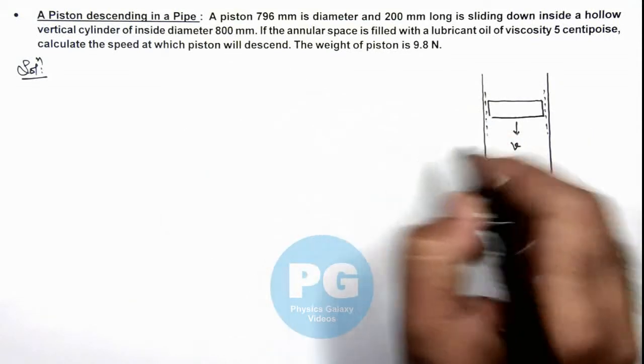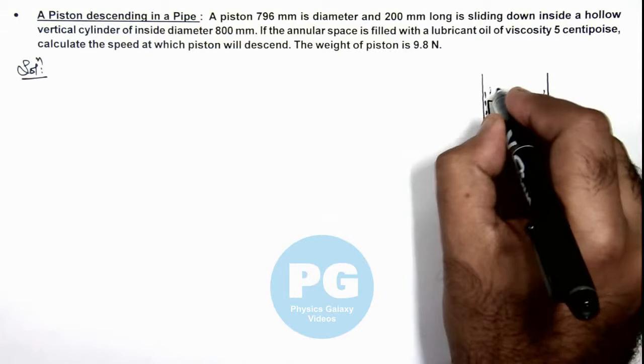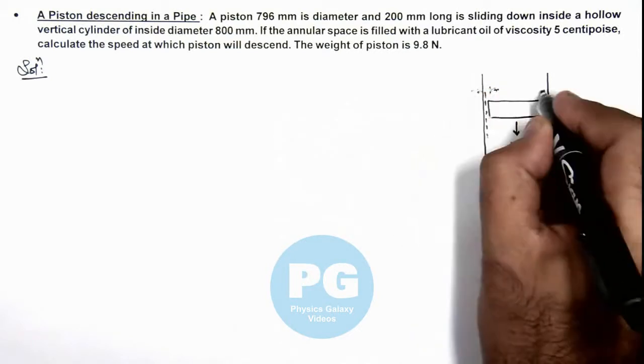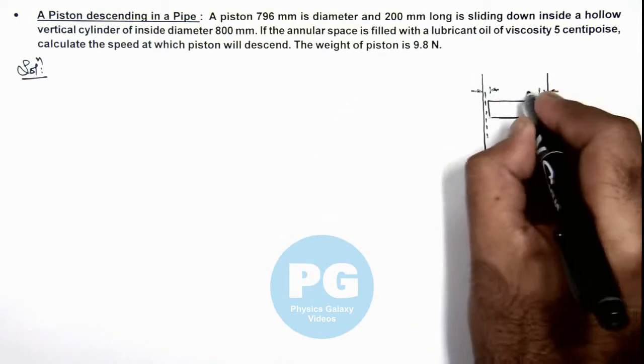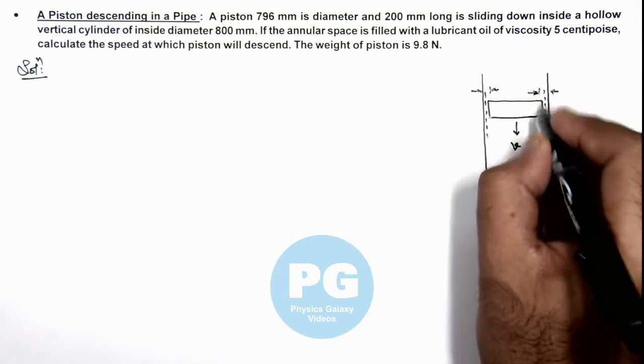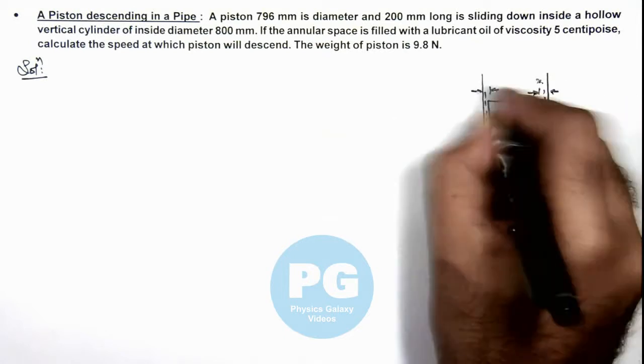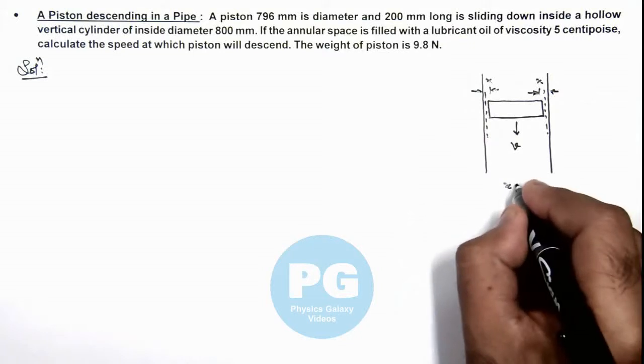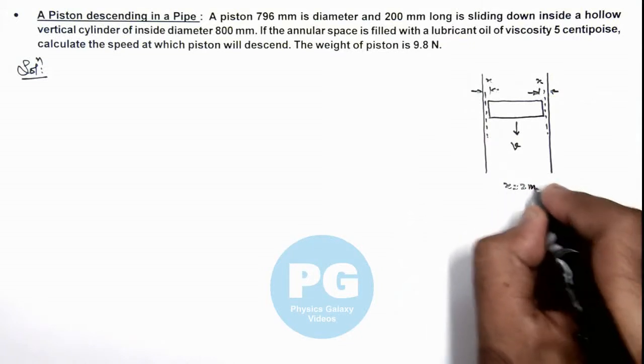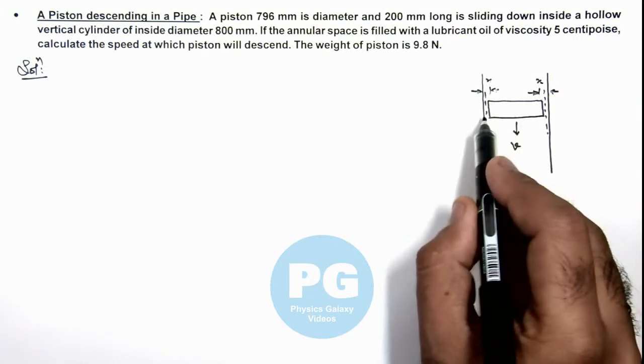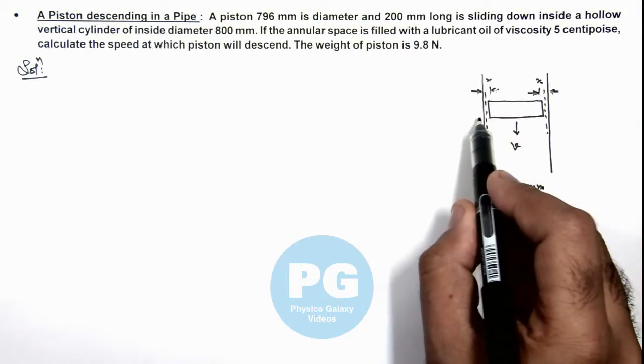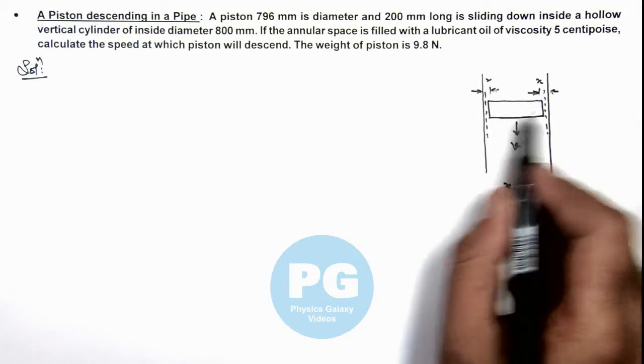So in this situation, we can say the width which is there for the lubricant available between the wall of piston and pipe is say x. Then the value of x will be 2 mm here, the difference between pipe diameter and piston diameter, half of that.